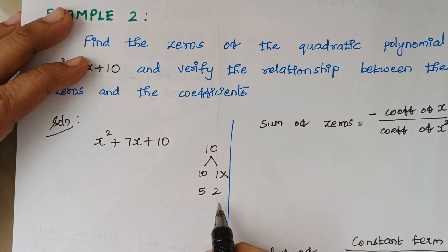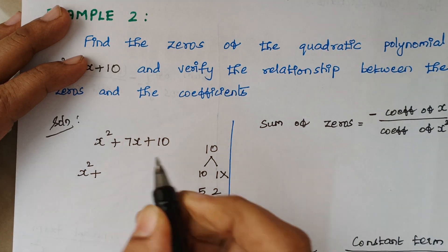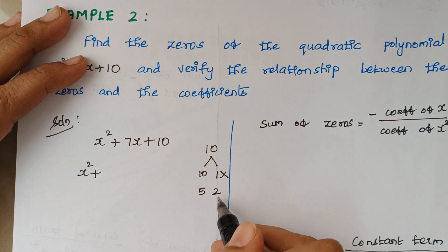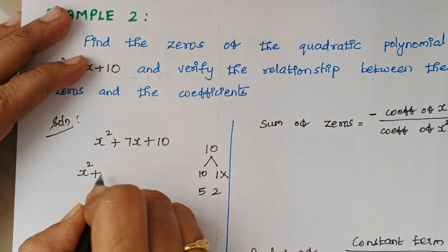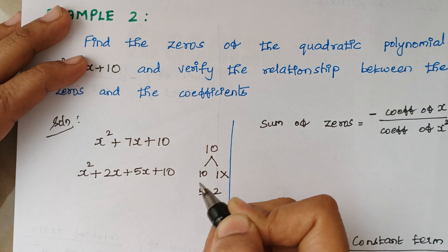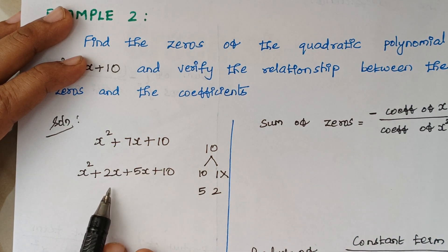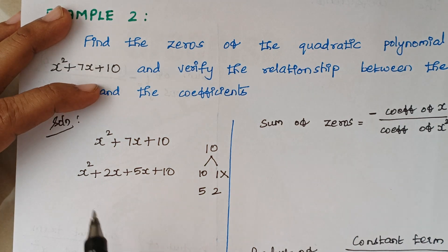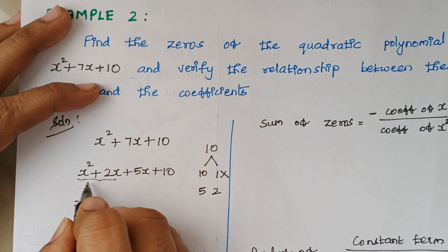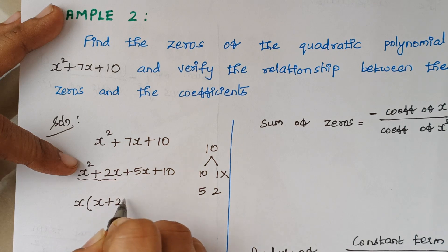The next step is to write the first term as such: x² + 7x + 10, where 7x can be written as 5x and 2x. So here I am writing it as x² + 2x + 5x + 10, and the last term we write as such — this 7x is written as 2x + 5x. Now, first consider the first two terms: when you take x outside, the remaining term will be x + 2.